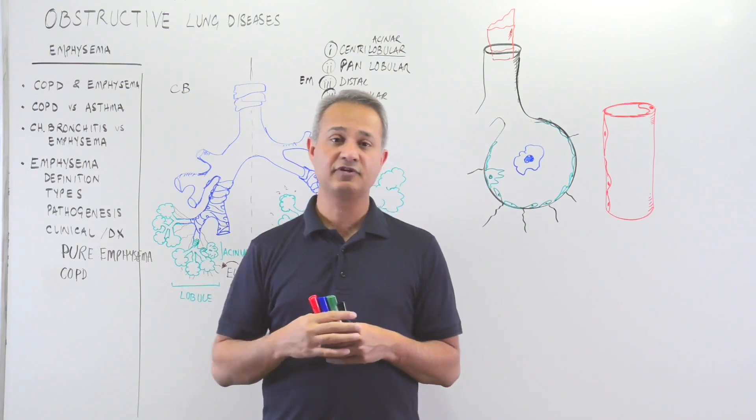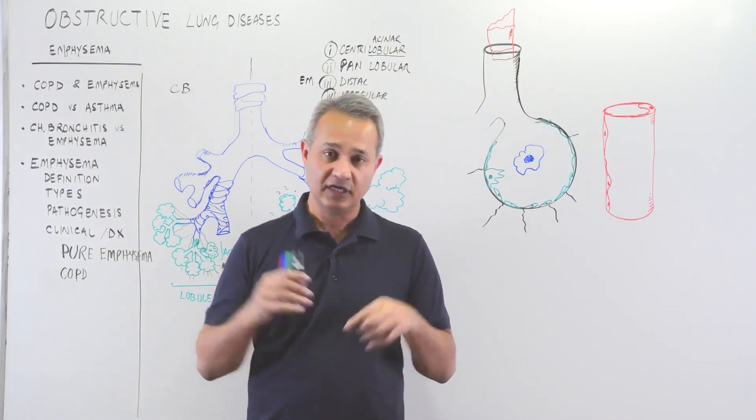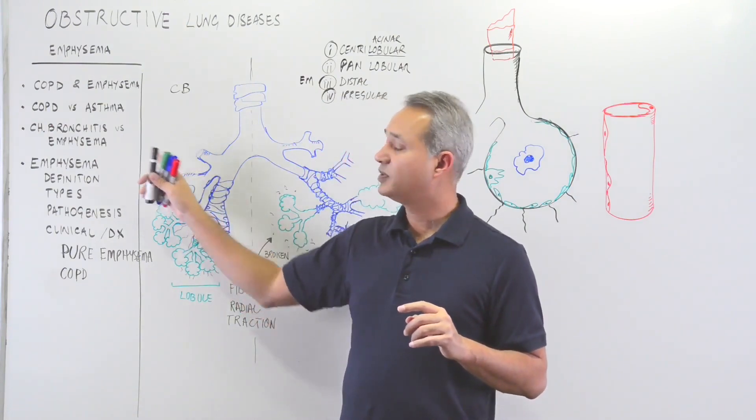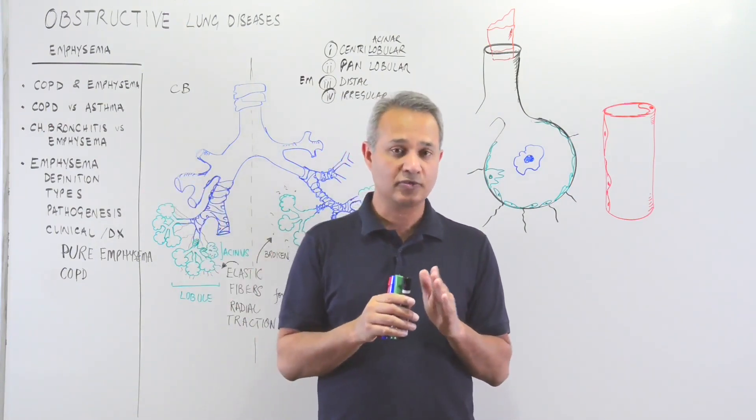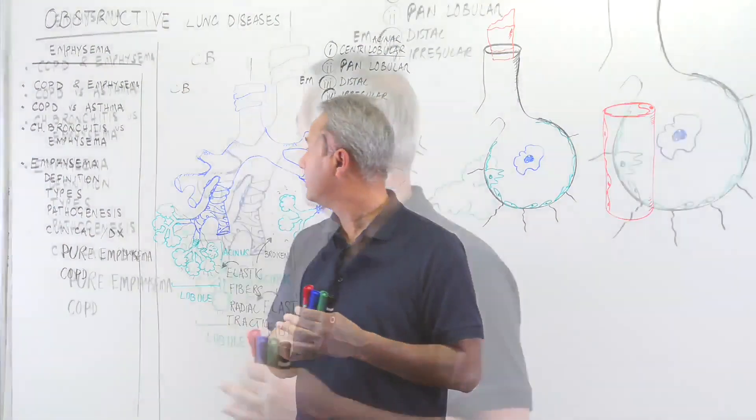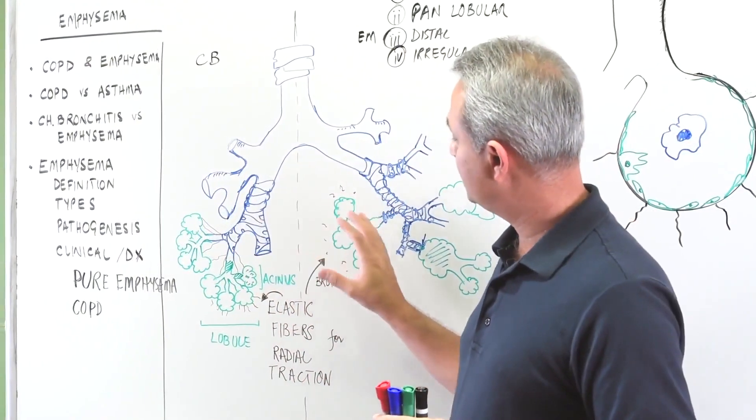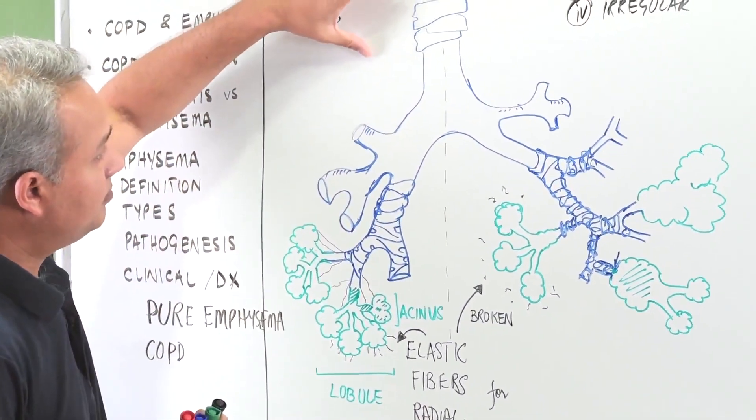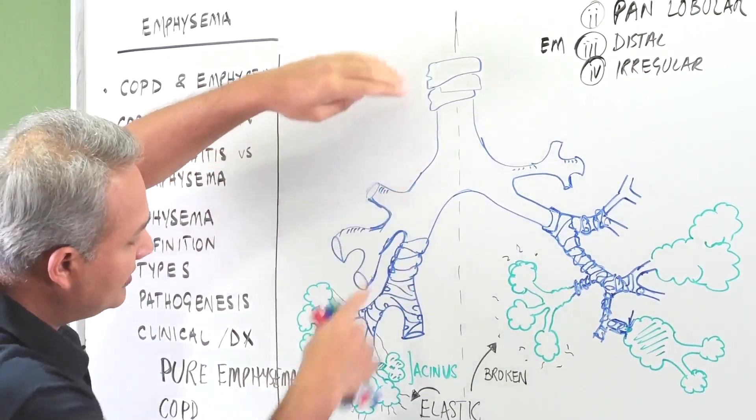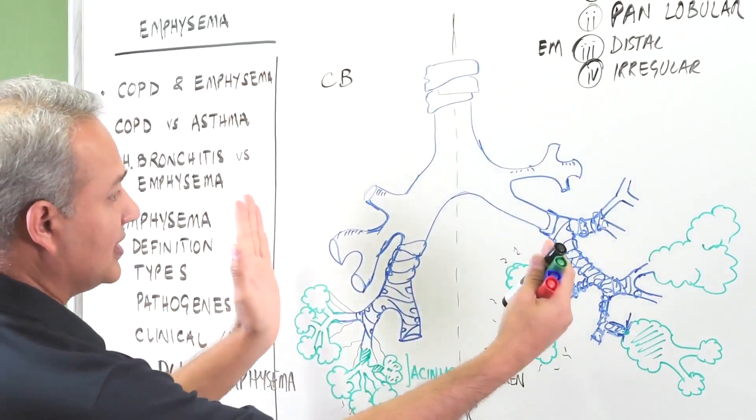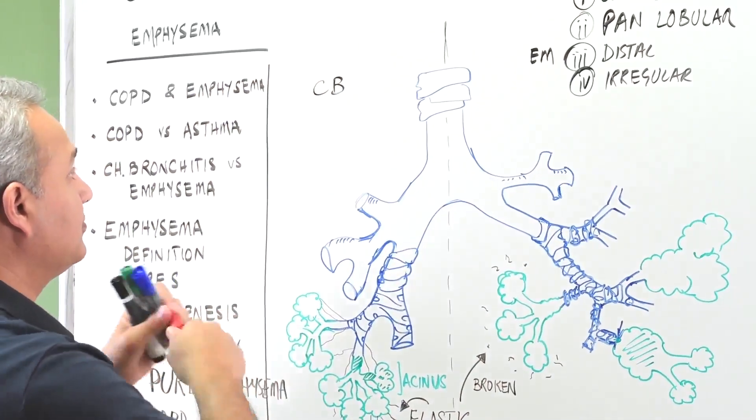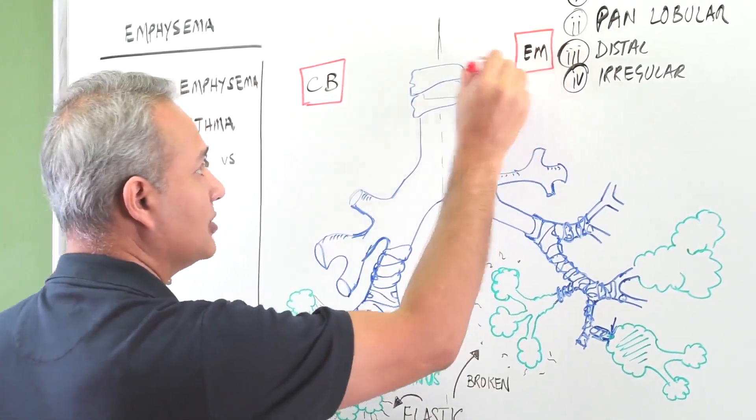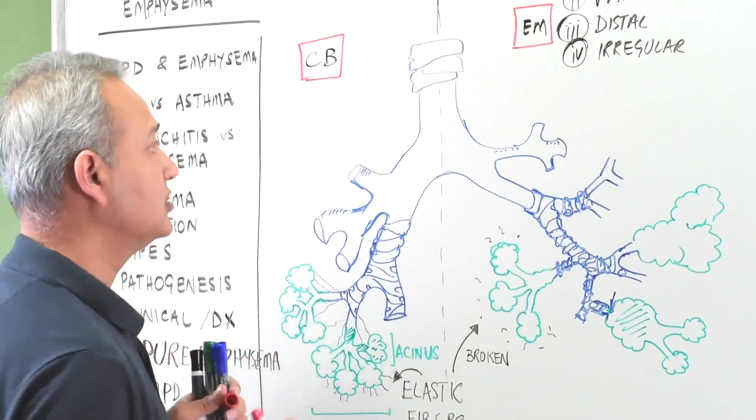What is the difference between chronic bronchitis and emphysema? This lecture is about emphysema, but let me quickly explain the difference. Here is a respiratory tree with two pathways I've drawn. The right side represents chronic bronchitis, and the left side represents emphysema.